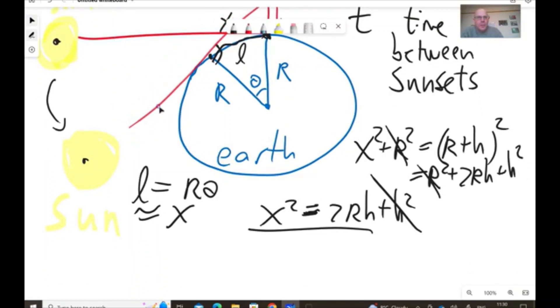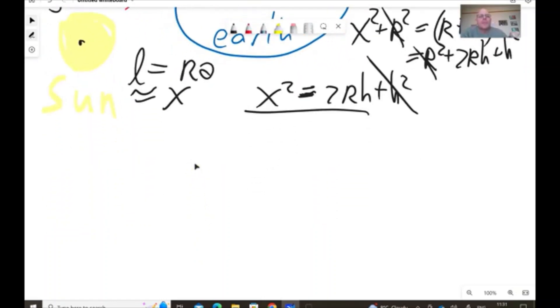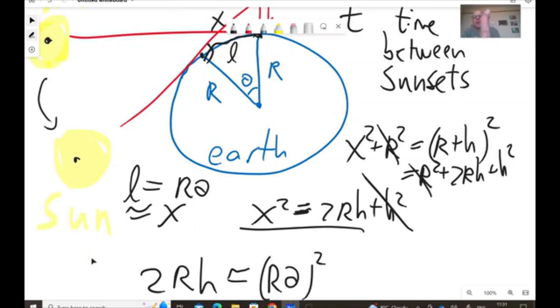It means that 2rh is approximately r theta squared, or that h is approximately, to a very good approximation, half r theta squared. Now, what is theta? Theta is the amount, is the angle that Earth rotated during, in between the two sunsets. So, let's calculate this angle theta.